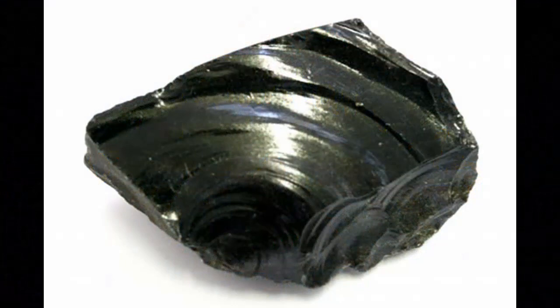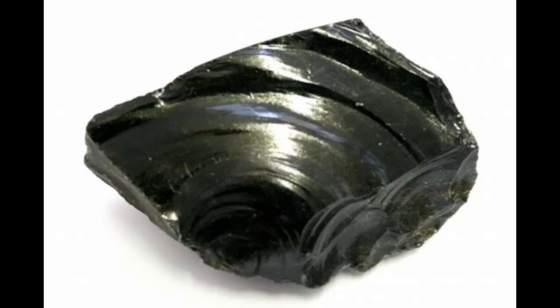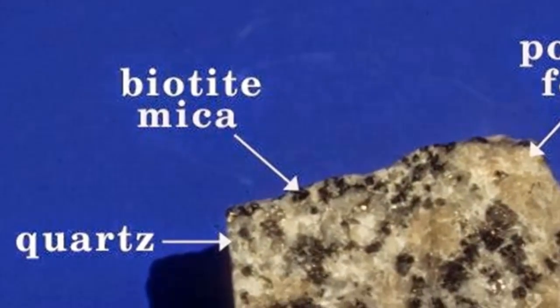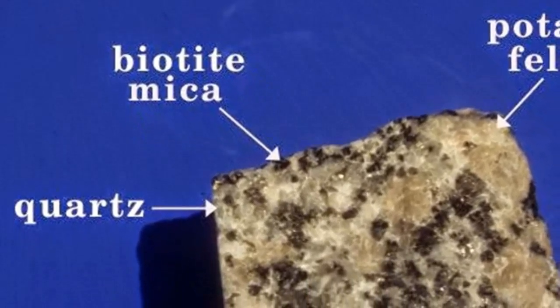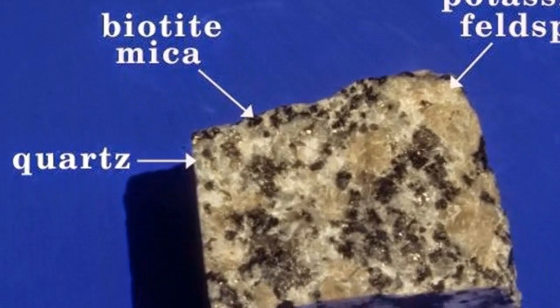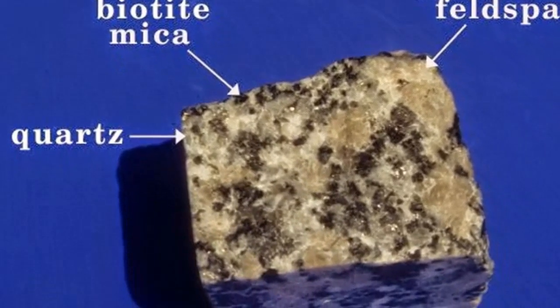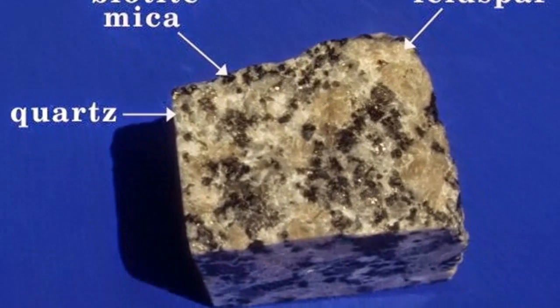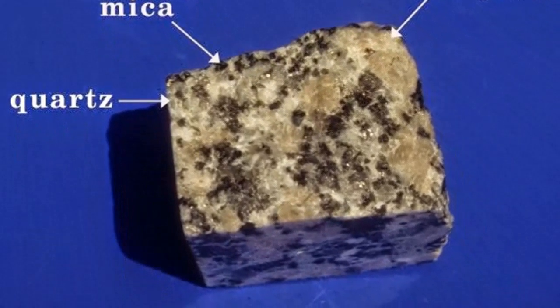3.4.4 igneous textures: glassy texture. Obsidian forms from different magma compositions, including granite and basalt. During some volcanic eruptions, molten rock is ejected into the atmosphere where it is quenched quickly. This rapid cooling may generate rocks having a glassy texture.